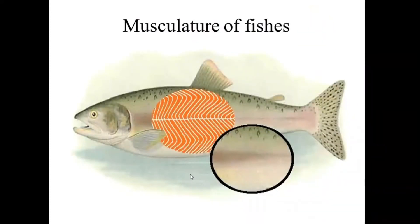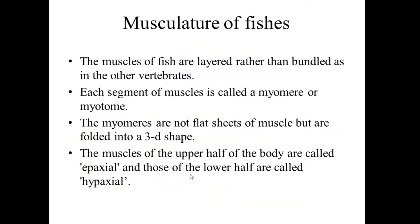Next, we discuss the Musculature of Fishes. In vertebrates like humans there are bundles of muscles, but in the case of fishes there are different systems of muscles. Rather than bundles, there are layers of muscles in some fishes. Each segment of muscles is called a myomere or myotome.